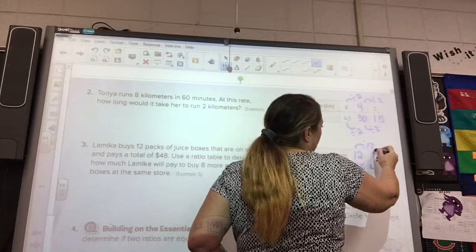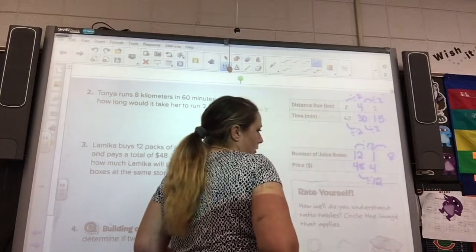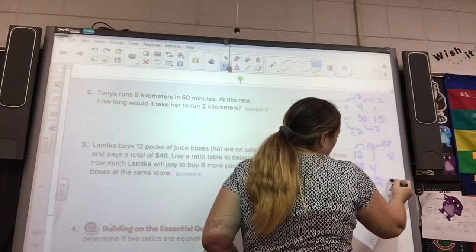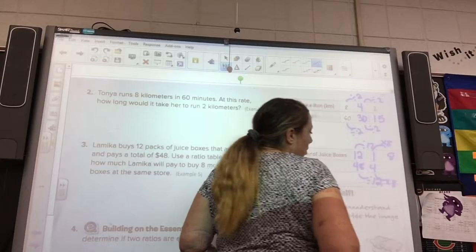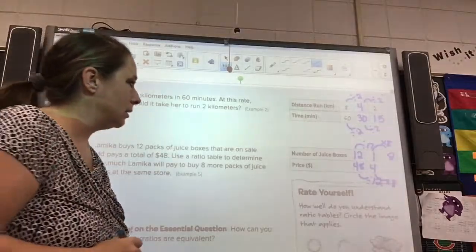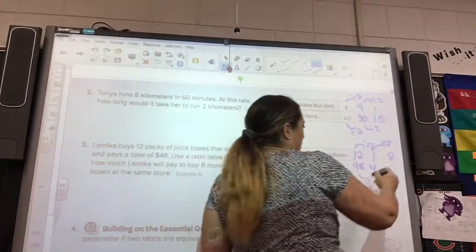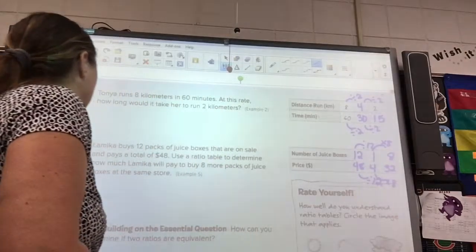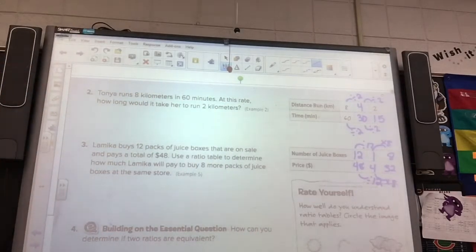So, now, how do we get from 1 to 8? 1 times 8, what you do on the top, you've got to do on the bottom. So, 4 times 8 is what? 32. So, if we want to look at how much she will pay to buy 8 more packs of juice at the same store, she would pay $32 to buy 8 more packs.